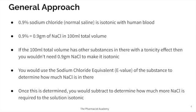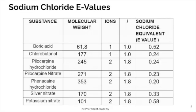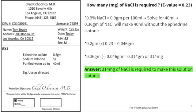The general approach: 0.9% sodium chloride, also known as normal saline, is isotonic with human blood. 0.9% means 0.9 grams of sodium chloride per every 100 mL total volume. So whenever you have 100 mL, putting in 0.9 grams of sodium chloride will make it isotonic. If the 100 mL contains other substances with a tonicity effect, you wouldn't need the full 0.9 grams. You use the sodium chloride equivalent of that substance to find how much NaCl it's contributing, then subtract to see how much more you need to add to make it isotonic.